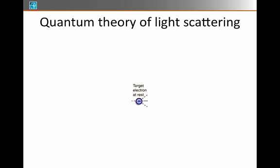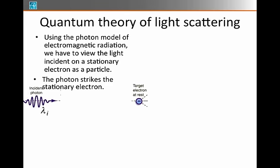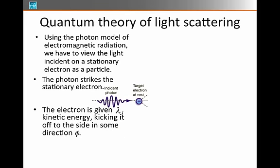The quantum theory of light scattering off of an electron is going to be considerably different. If we use the photon model of electromagnetic radiation, we have to view the light incident on a stationary electron as it being a particle. The photon strikes the stationary electron, and the electron is given kinetic energy, kicking it off to the side in some direction by an angle of phi.